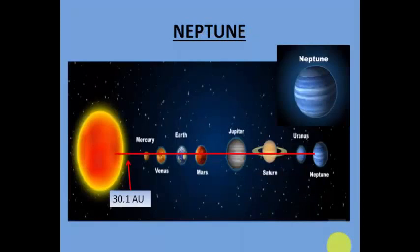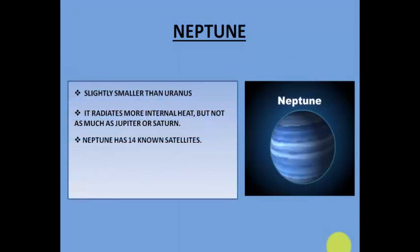Neptune and Uranus are almost similar in size. The distance between the Sun and Neptune is 30.1 astronomical units, compared to 19.2 for Uranus. Neptune is slightly smaller than Uranus but radiates more internal heat, though not as much as Jupiter or Saturn. Neptune has 14 known satellites.